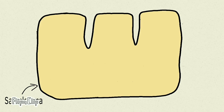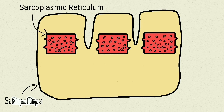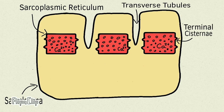Each muscle fiber is lined by a sarcolemma. Inside the sarcolemma there is sarcoplasmic reticulum — this is modified endoplasmic reticulum which contains calcium ions. These calcium ions are the ones that conduct the entire excitation and relaxation leading to contraction of a muscle. The sarcoplasmic reticulum has some terminal cisternae that are present. Each muscle fiber also has transverse tubules — T-shaped tubules whose importance is in passing the action potential when the muscle has to contract.